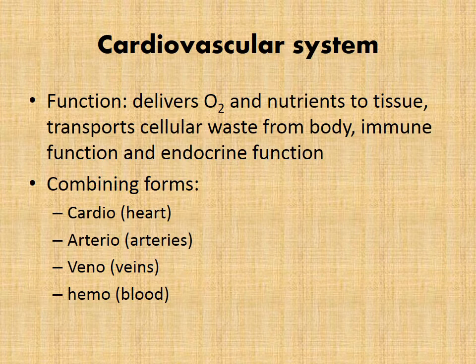The cardiovascular system delivers oxygen and nutrients to tissues, transports cellular waste from the body, and has immune and endocrine functions as well. Combining forms for the cardiovascular system would be cardio, referring to the heart; arterio, referring to the arteries; veino for veins; and hemo, which means blood.